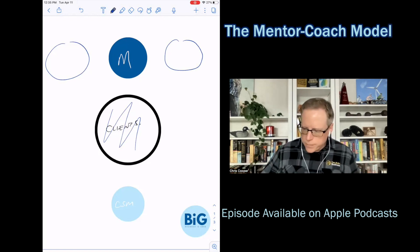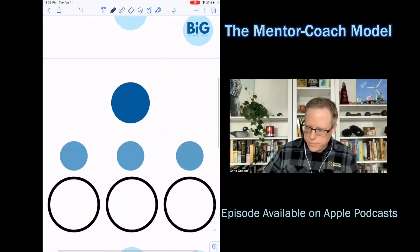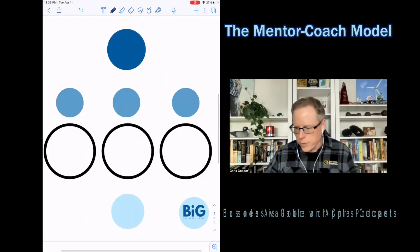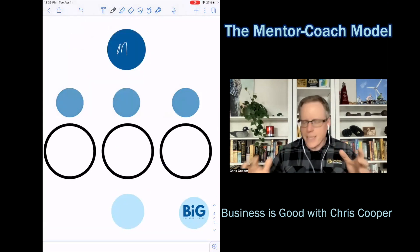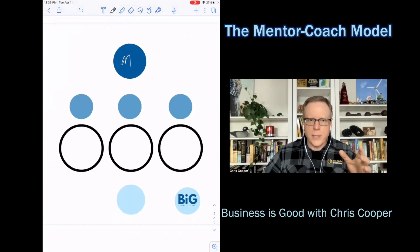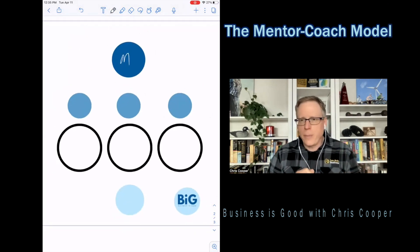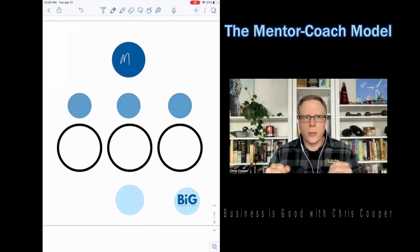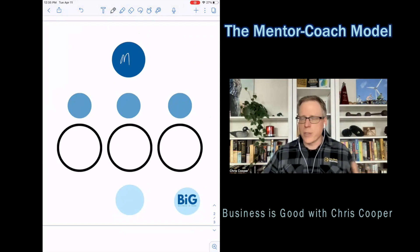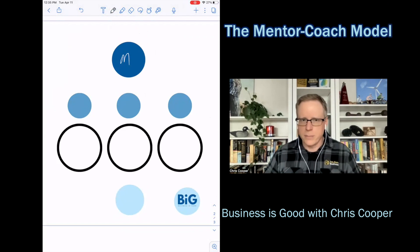So here's an alternative model. This is the mentor coach model. So in this model, what you have here is a mentor still at the top. And this is kind of the figurehead person. This is the person who like sets the tone. So they determine the curriculum. They're probably the icon that's in all the marketing. They're the person who might be like giving the big seminars or the speeches. They're the face in all the curriculum.